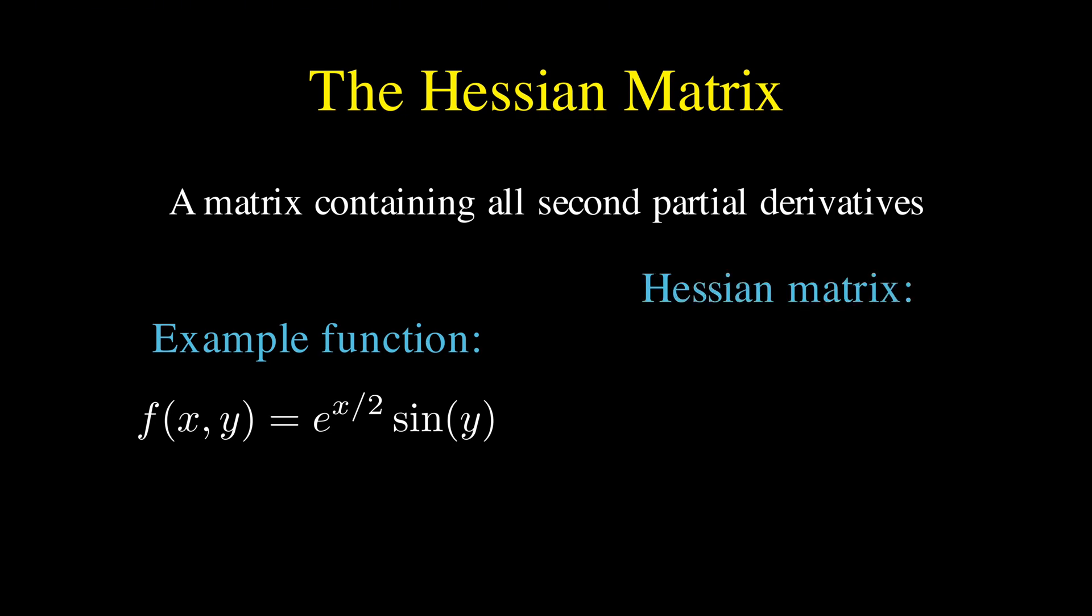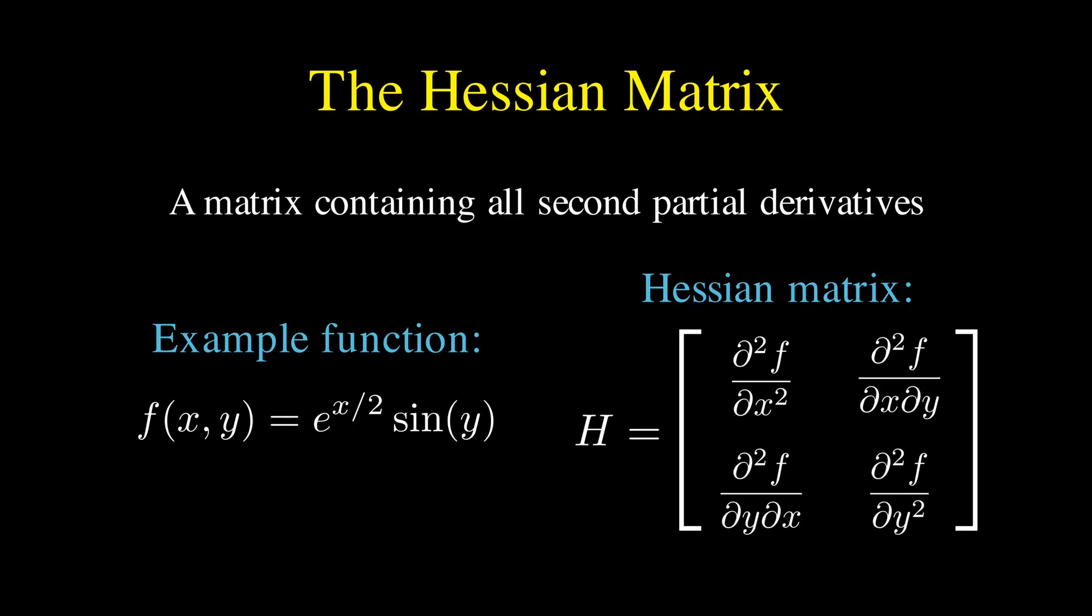And what the Hessian matrix is, often denoted with a capital H, is that it's a matrix that contains all the second partial derivatives of your function in a very organized way.